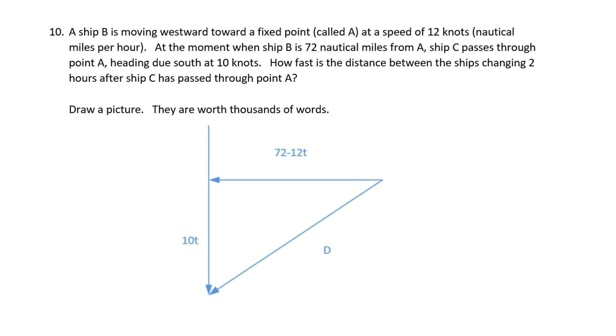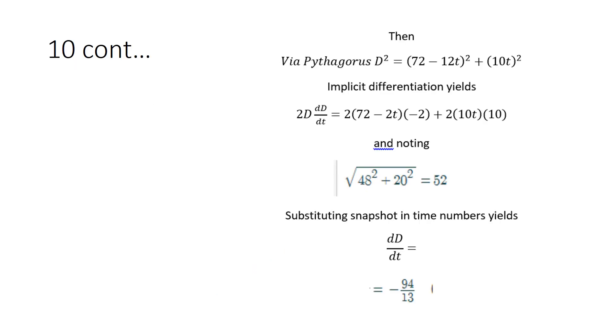This is a word problem about a ship. We can see that the picture is worth something. If you drew a proper picture, that would be worth, I suppose, some partial credit. Then you have to use a Pythagorean theorem, and you do implicit differentiation, and you plug in the numbers from the snapshot in time, and get minus 94 over 13, or some other fraction. Some students sometimes don't reduce a problem like that.